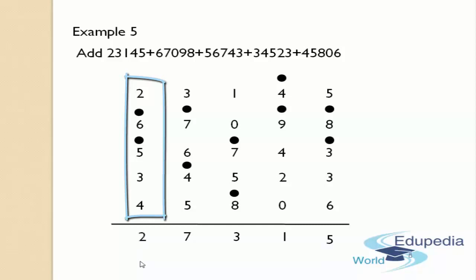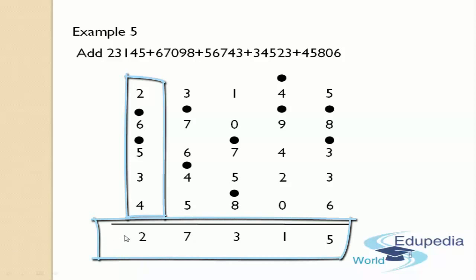Now count how many dots are in this column — you can see 2 dots. There are no more columns to add this count to, so just write that count of dots beside the answer. Therefore you have got the answer: 2 lakhs 27,350. When you add all these numbers you will get this answer, that is 2,27,350.